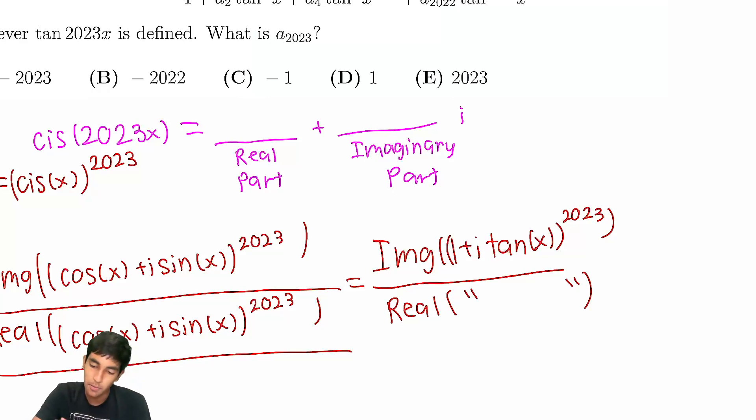And we don't really care about the bottom. We really just care about the top, right? We're looking for the coefficient here. And now, this is just binomial theorem. This is going to be i to the 2023 times tangent 2023 to the x. And i to the 2023, well, that's just negative i. So negative, so negative 1 is going to be this coefficient here.